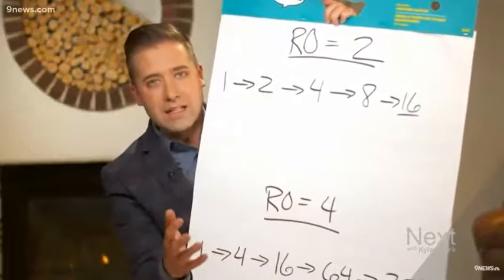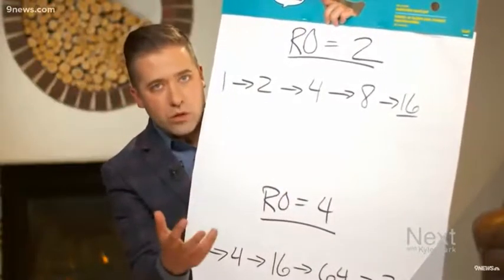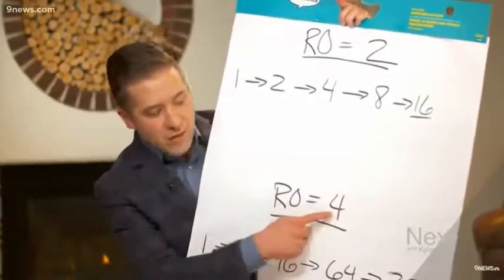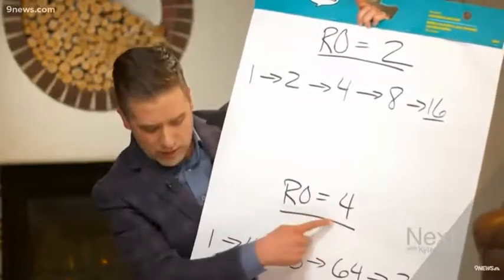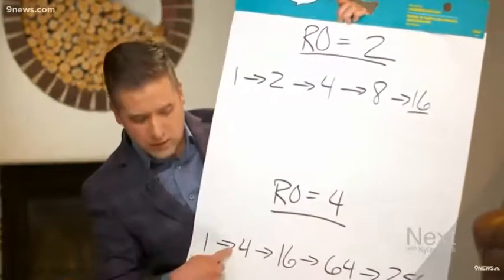The reason that the state has a worst-case scenario is because they're counting on an R-naught of four, a situation in which one person gives the virus to four people.